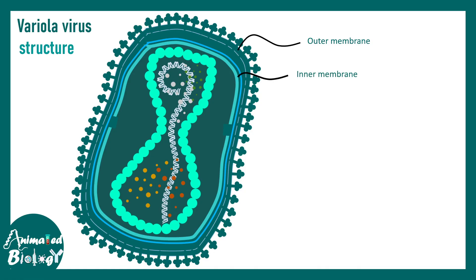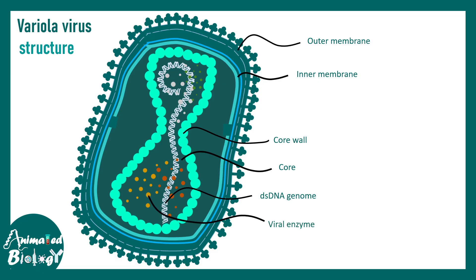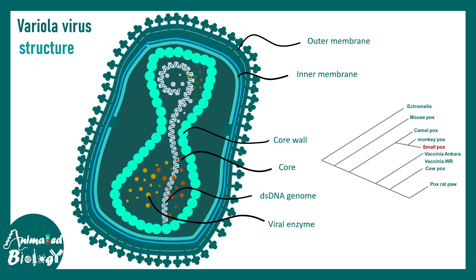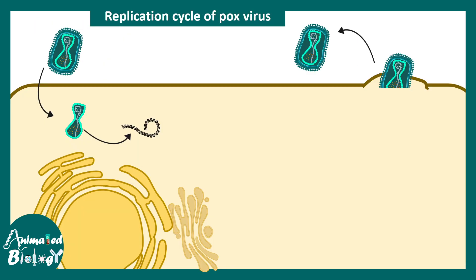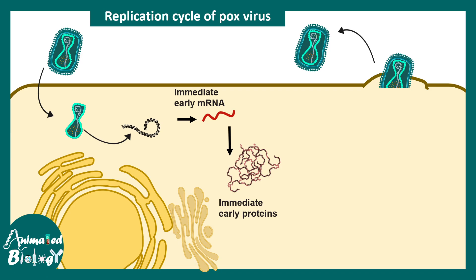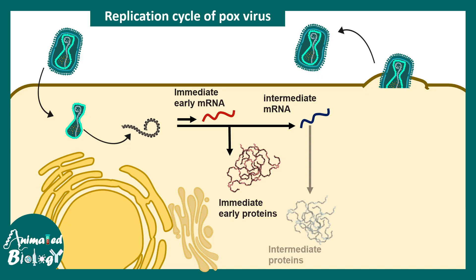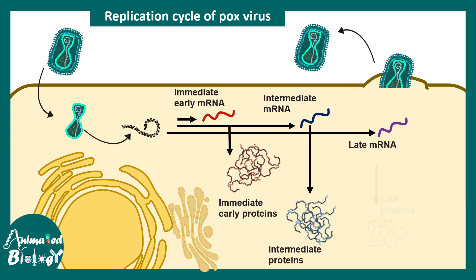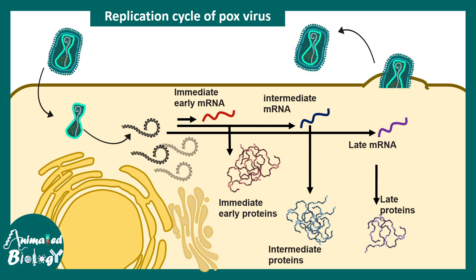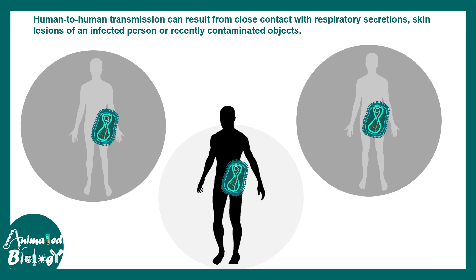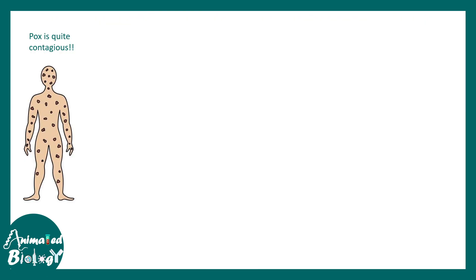Looking at the viral structure: there is an outer membrane, inner membrane, core wall, the core, a double-stranded DNA genome, and viral enzymes required for replication. Smallpox is a cousin to monkeypox viruses. In the replication cycle, the virus injects its core inside the cell; immediate early mRNA produces immediate early proteins, then intermediate mRNA gives intermediate proteins, then late mRNA gives late proteins, while the genome replicates and viral packaging is completed. Spread occurs via respiratory droplets.